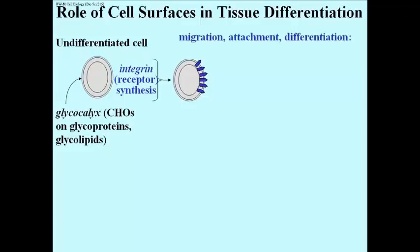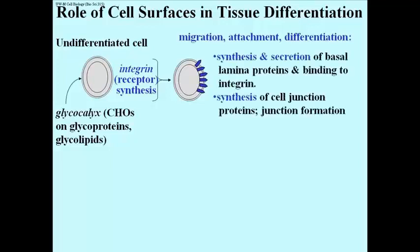Cells will then migrate and attach at different places in the embryo and begin to differentiate, so that you get all the different cell types of an embryo, then a fetus, and eventually a newborn in the case of humans.